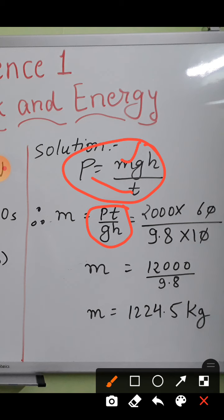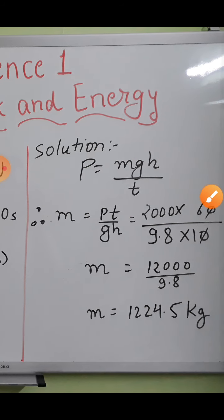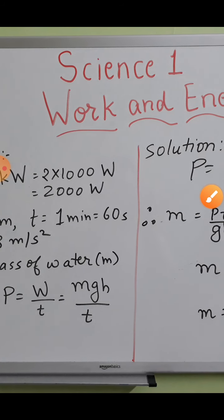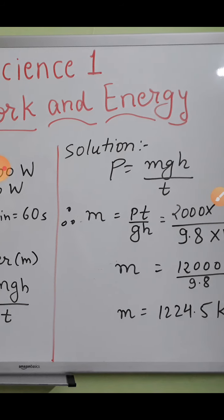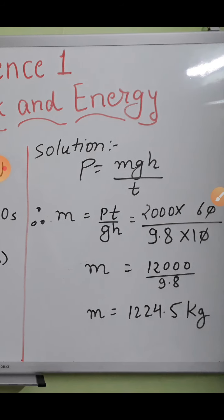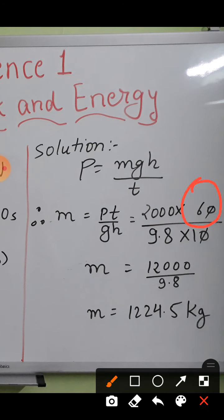What is the value of p? Power is 2000 watts, then time is 60 seconds. g value is 9.8 meter per second square, and h value that is height is 10 meter. Simply we have put the values.